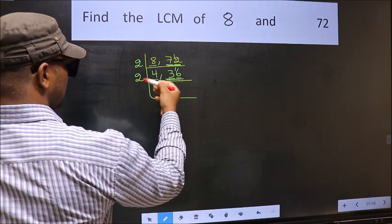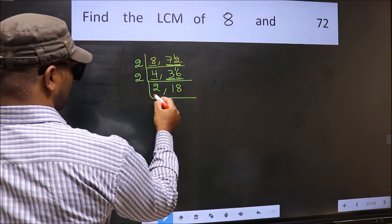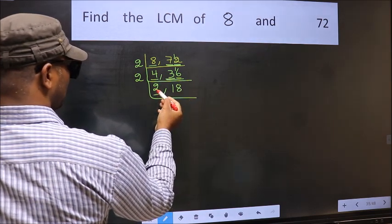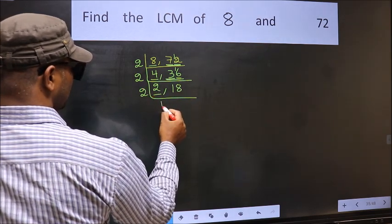When do we get 16 in the 2 table? 2, 8, 16. Now here we have 2 — 2 is a prime number, so 2 times 1 is 2.